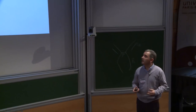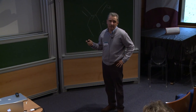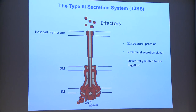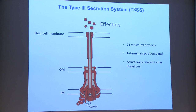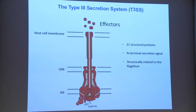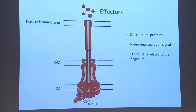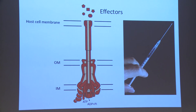These effector proteins can make multiple functions to help infection proceed: they can target the cell cycle, inflammation, the cytoskeleton, and mitochondria. These machineries are coupled to a dedicated ATPase that energizes translocation. Effectors carry a short N-terminal sequence — not cleaved — that is recognized by the machinery to be translocated into the cytosol of mammalian cells. In a way, this is like a molecular syringe.